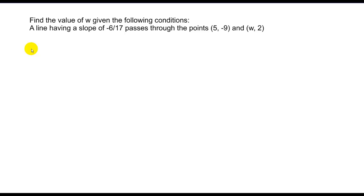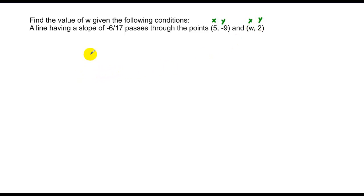In this next example, we use the slope calculation of the difference of y's over the difference of x's, but we're solving for something different — finding the value of w, given that the slope is negative 6 seventeenths and it passes through the point (5, –9) and another point (w, 2). The w represents an x-coordinate and 2 represents a y-coordinate. So the slope, negative 6 seventeenths, equals the second y minus the first y over the second x minus the first x.